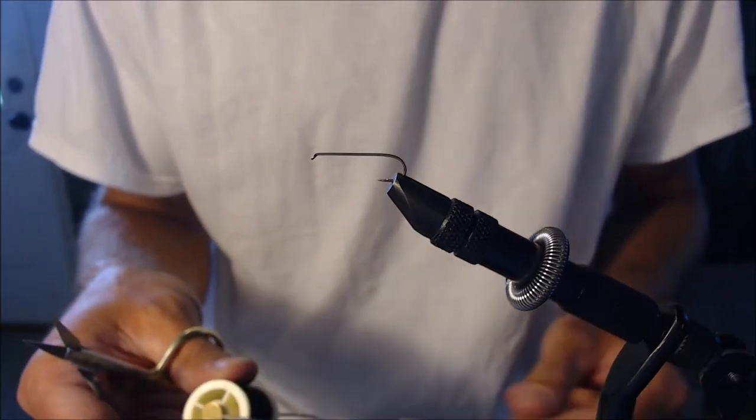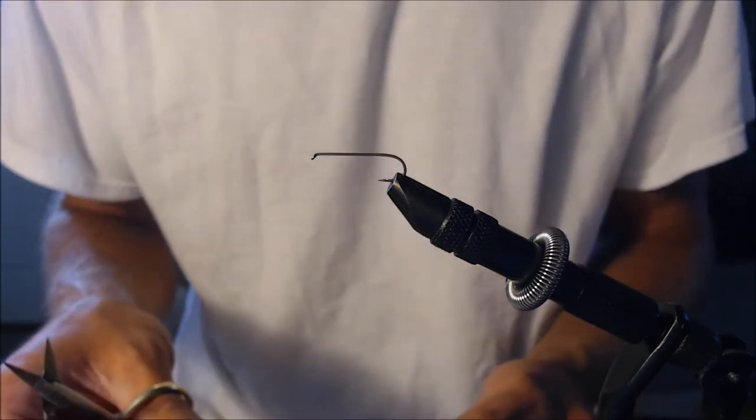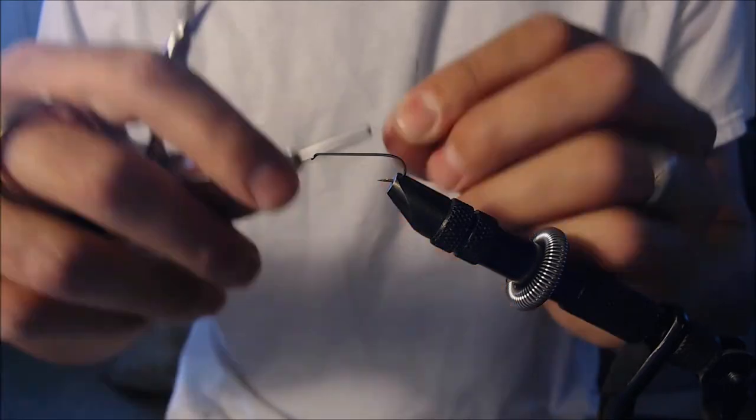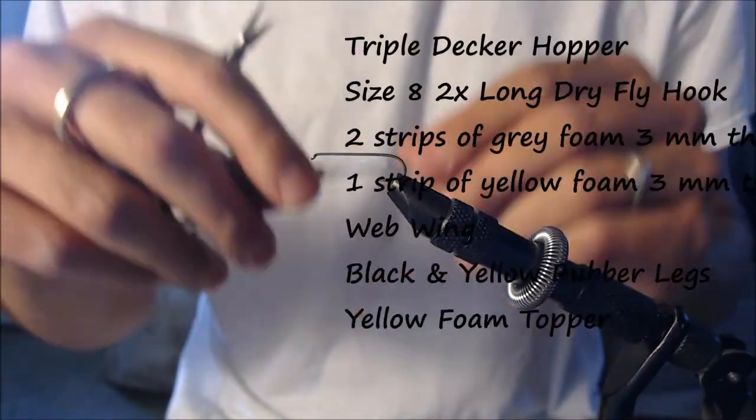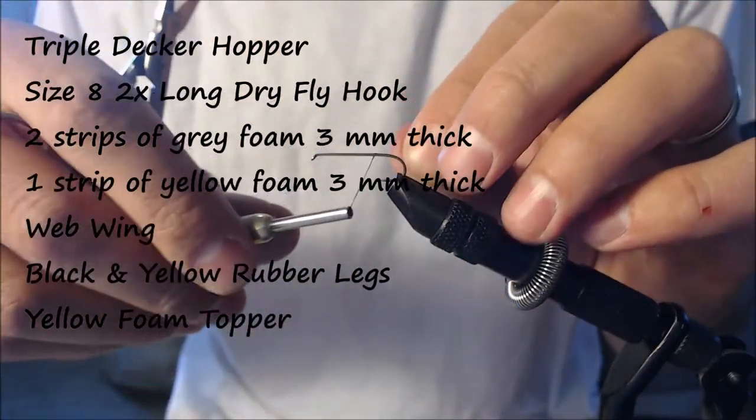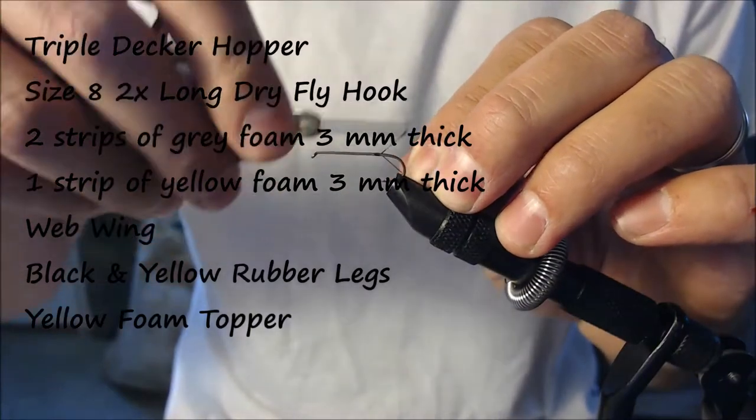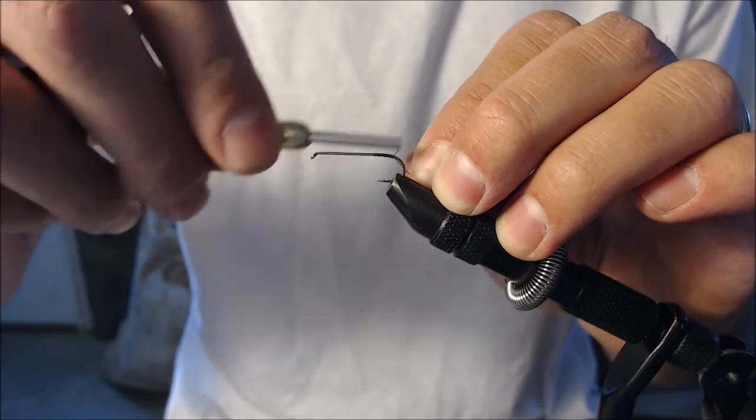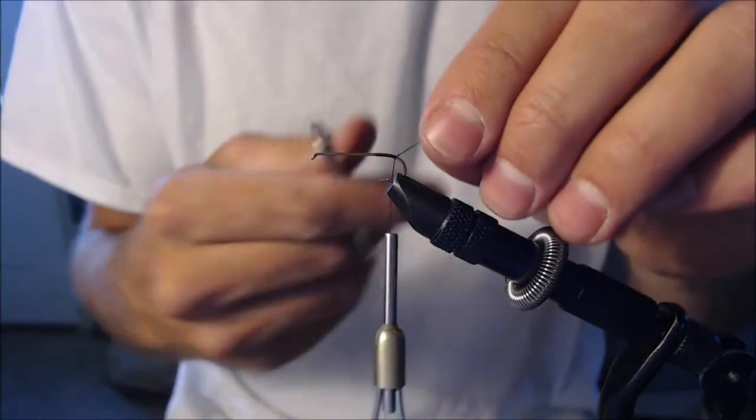Okay, for this fly we're going to tie a grasshopper with three different pieces of foam. I'm just going to get my thread on my hook, this is a size 8 2x long dry fly hook. I'm gonna get the thread, black floss thread, and get it right here to the back of the hook just like that.